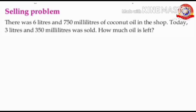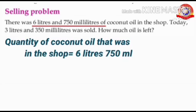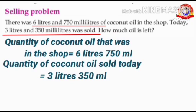There was 6 liters and 750 milliliters of coconut oil in the shop. Today, 3 liters and 350 milliliters was sold. How much oil is left? How much coconut oil was there in the shop? Yes, 6 liters and 750 milliliters. So, quantity of coconut oil that was in the shop equals 6 liters 750 milliliters. How much oil was sold today? Yes, 3 liters and 350 milliliters. So, quantity of coconut oil sold today equals 3 liters 350 milliliters.